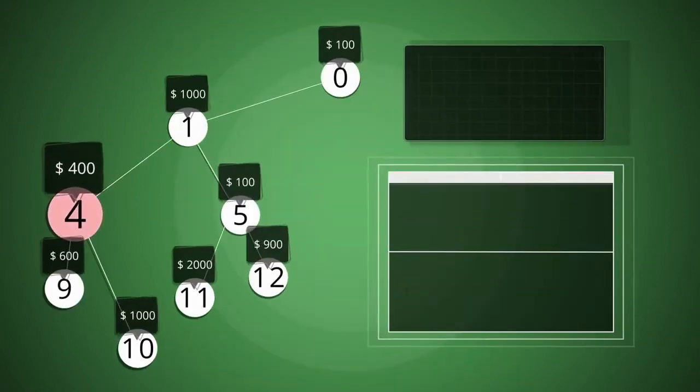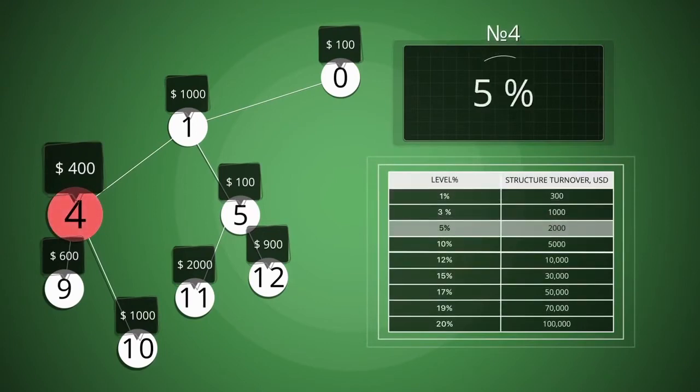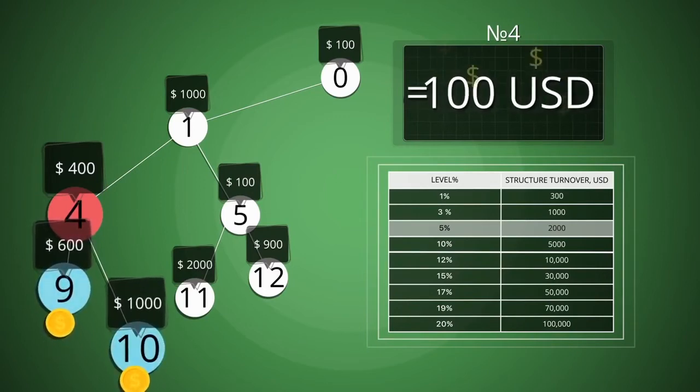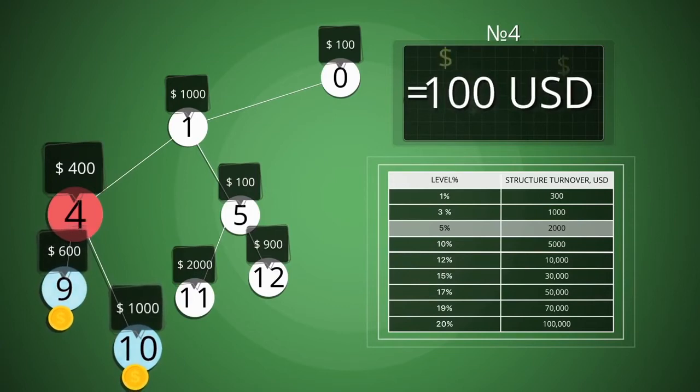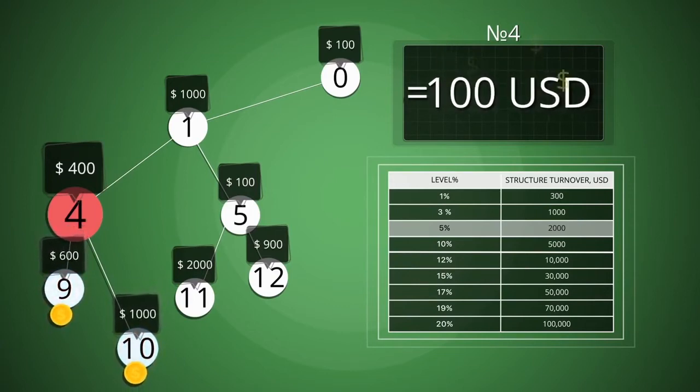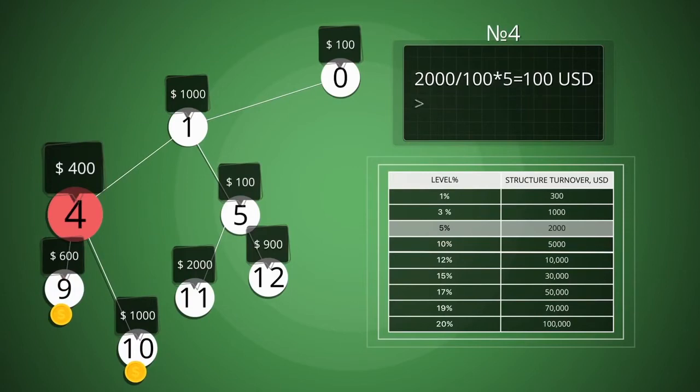Referral bonus will be like this. The level of total weekly turnover for number 4 is 5%, which corresponds to $2,000 divided by 100 times 5 equals $100 of bonus. But number 4 has lower branches 9 and 10, which have already got bonuses for turnovers. Accordingly, number 4 will get only the difference. $100 minus branch 9's $6 minus branch 10's $30 equals $64.